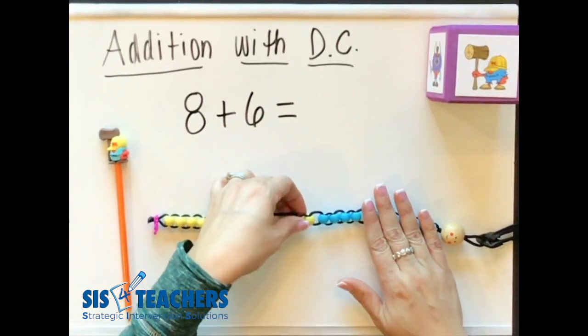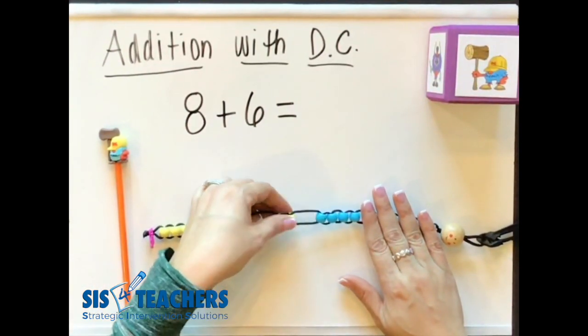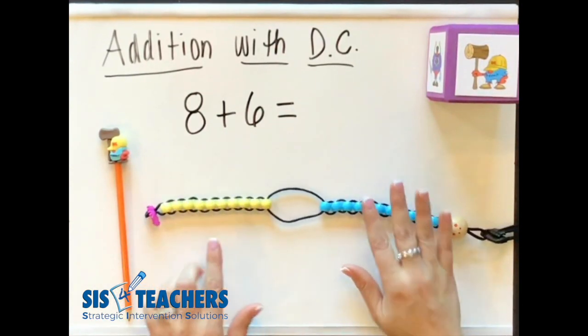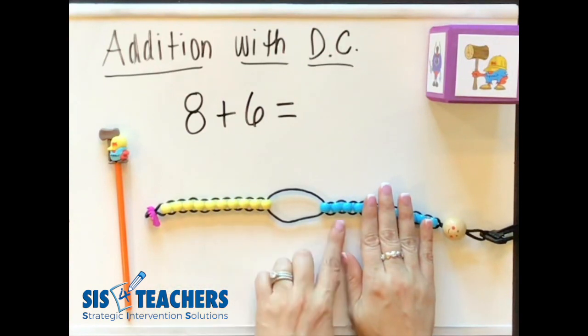So I'm going to show it concretely how I'm going to decompose the 6 into 2 and 4. I'm going to take that 2 and add it to my 8. And I now can see my answer is 14.